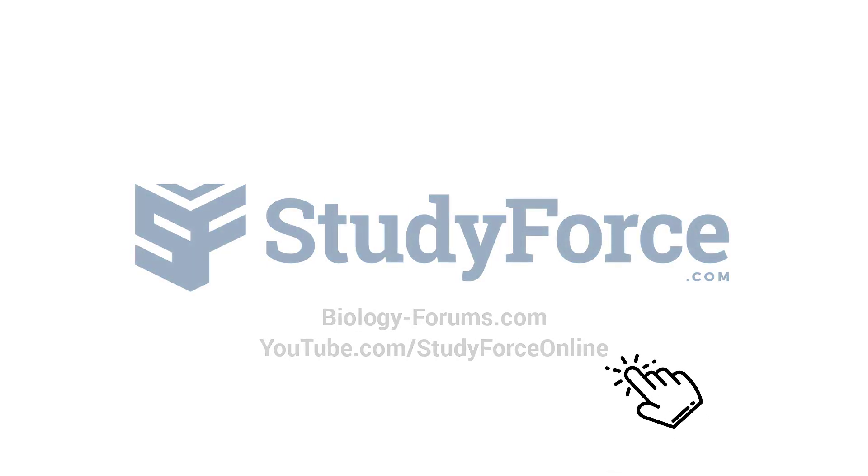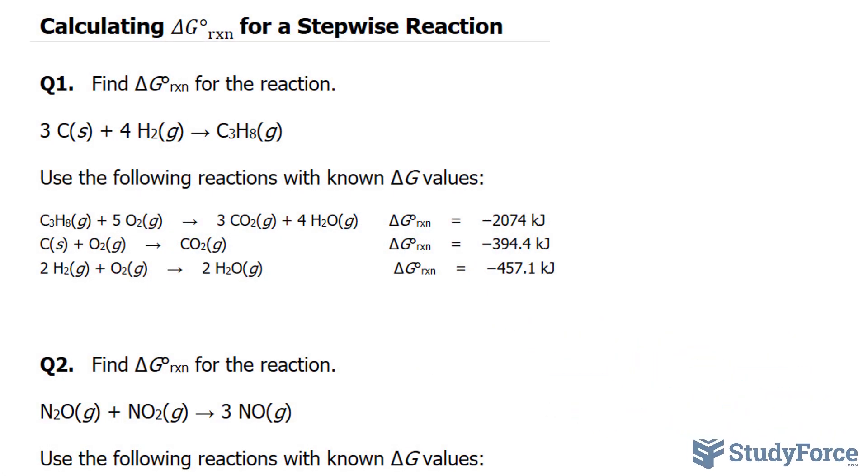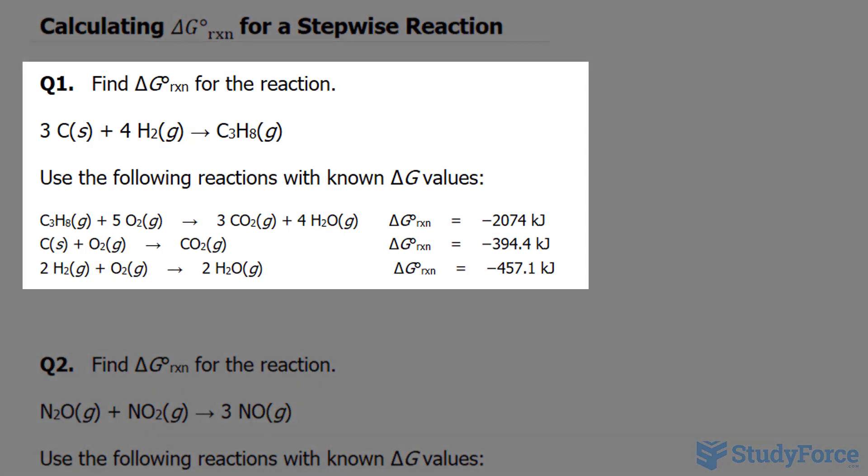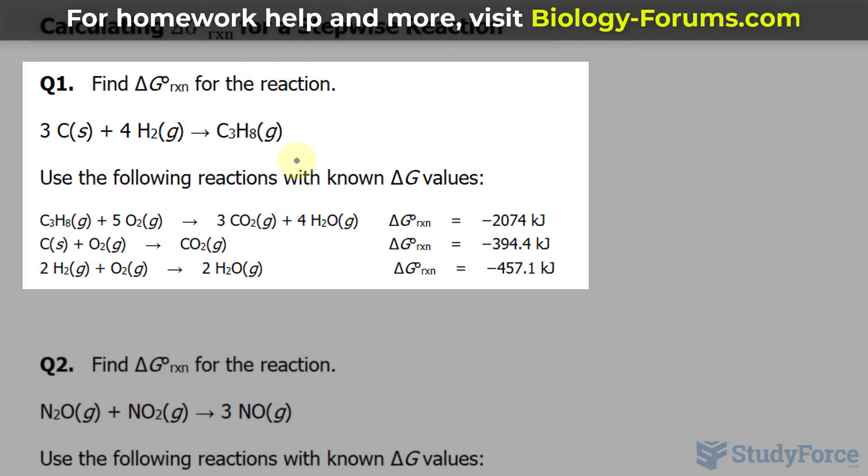In this lesson, I'll show you how to calculate delta G for the reaction for a stepwise reaction. The first question reads, find delta G for the reaction shown underneath and use the following reactions with known delta G values to come up with this.